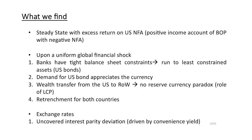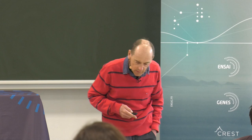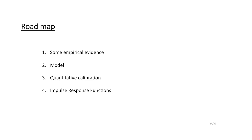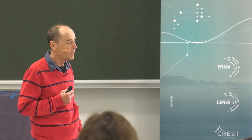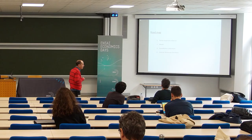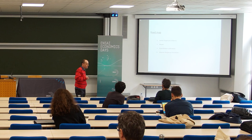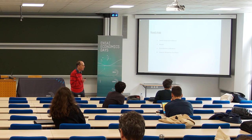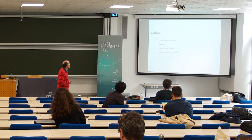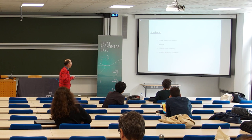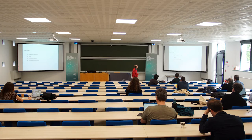There's no reserve currency paradox — there is a fall in US absorption, but this is associated with a real exchange rate appreciation because the real exchange rate is driven not by the terms of trade but by deviations from the law of one price. This is a paper with Charles Engel, so we have local currency pricing. We have retrenchment for both countries and an endogenous deviation from uncovered interest rate parity.